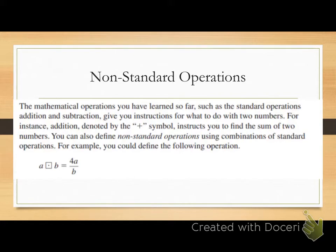For example, you could define the following operation: a squared dot b equals 4a divided by b. So you're combining multiplication along with division. It just turns into an expression that we evaluate, which is what we talked about last week. That's just what non-standard operations are — the combination of operations we know how to do already. So let's look at some examples.